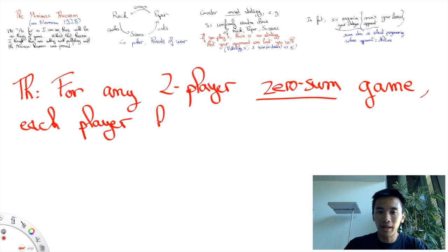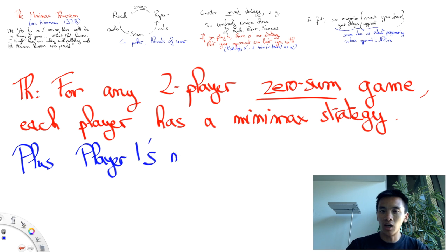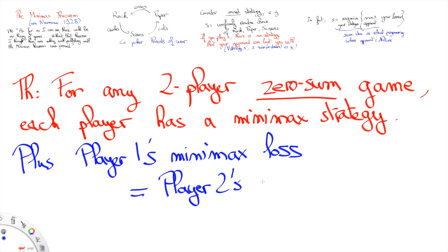each player has a Minimax strategy that minimizes his losses against an all-knowing opponent that aims at maximizing them. Moreover, one's expected losses when playing the Minimax strategy equal the opponent's expected gains when he plays his Minimax strategy.